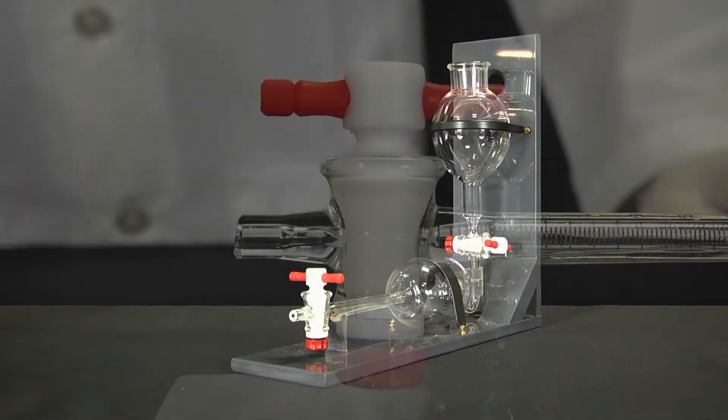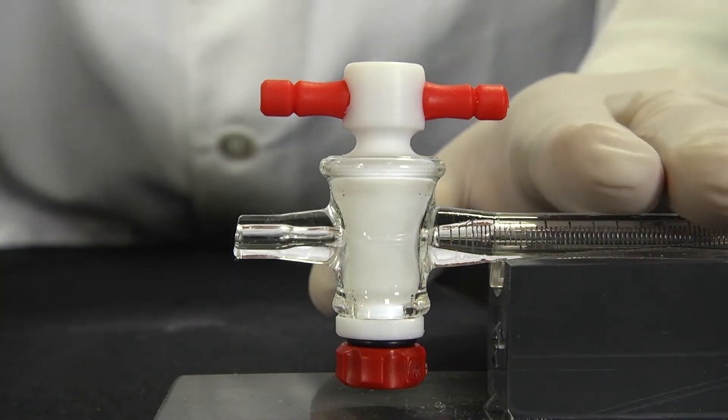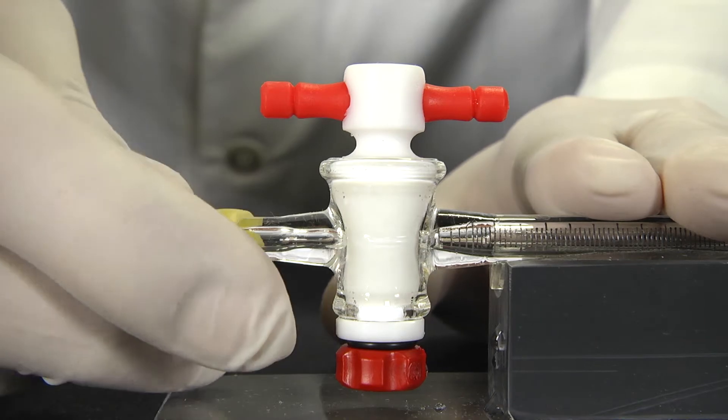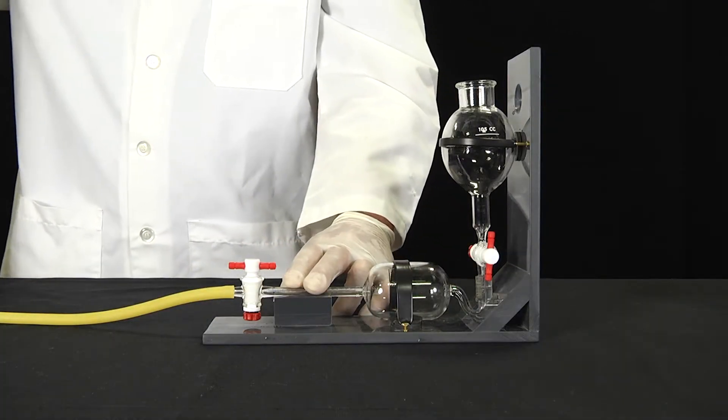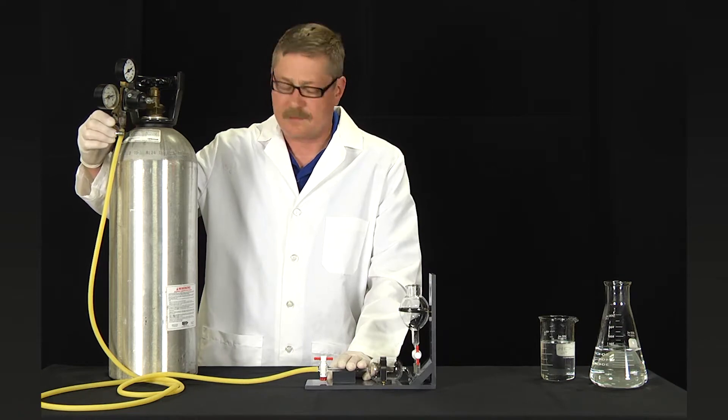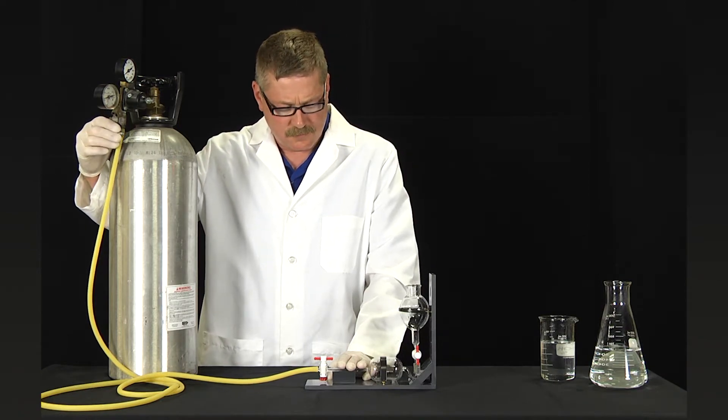To operate, attach a hose from the CO2 gas supply being tested to the nipple of the absorption burette by gently pushing downward on the support block to prevent the stem from breaking. Make sure that the gas supply is regulated to below 10 psi.